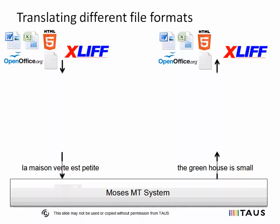As we demonstrated earlier in this tutorial, the MOSES MT system is designed to translate plain text sentences. To translate different publishing and translation formats, these have to be parsed into sentences, translated using a trained MOSES MT system, and integrated back into the original format. As a side note, this is even necessary for plain text, as plain text is usually also formatted into paragraphs, sections, and possibly even chapters.